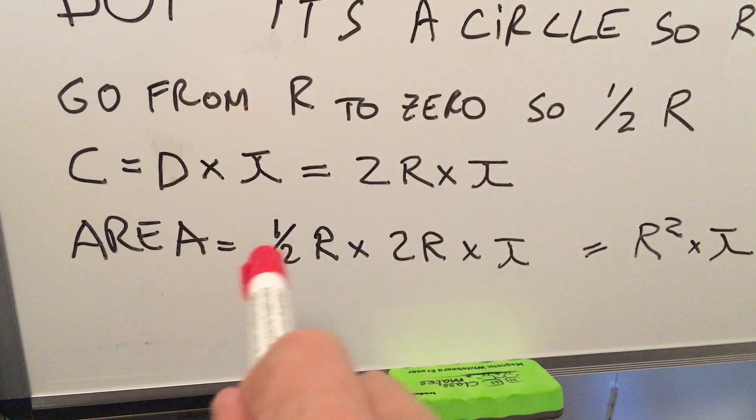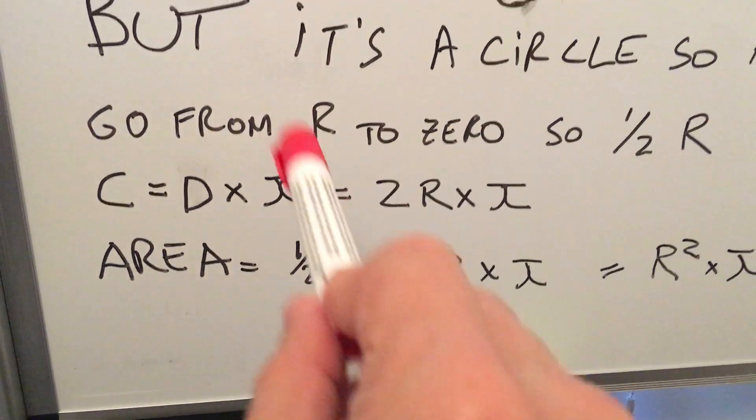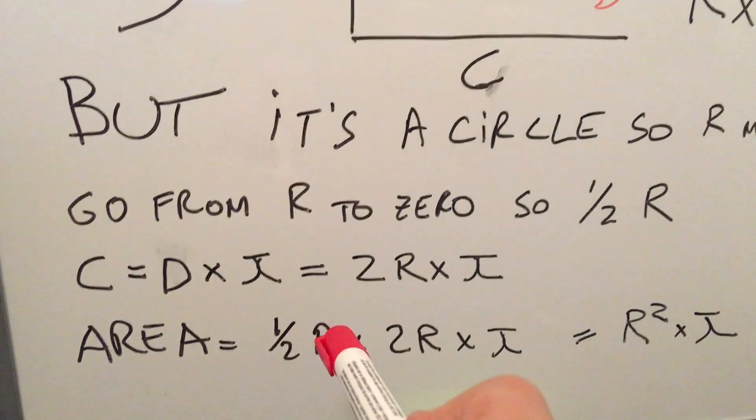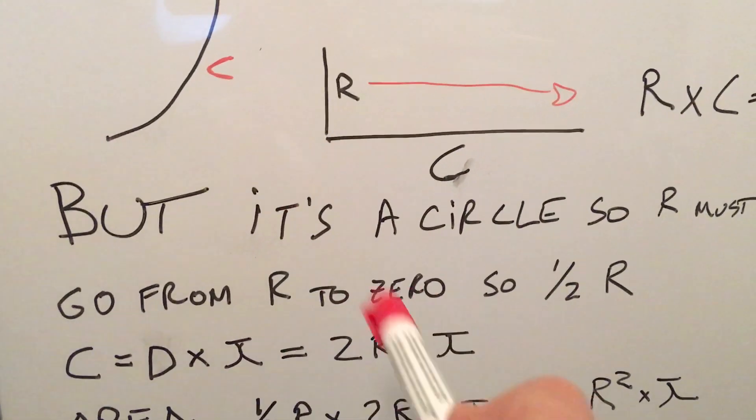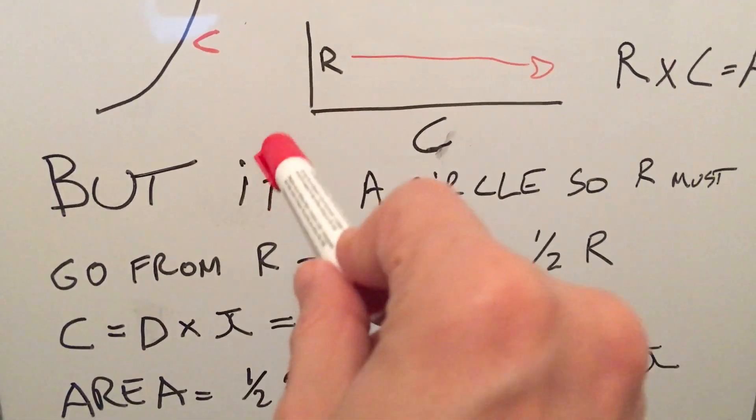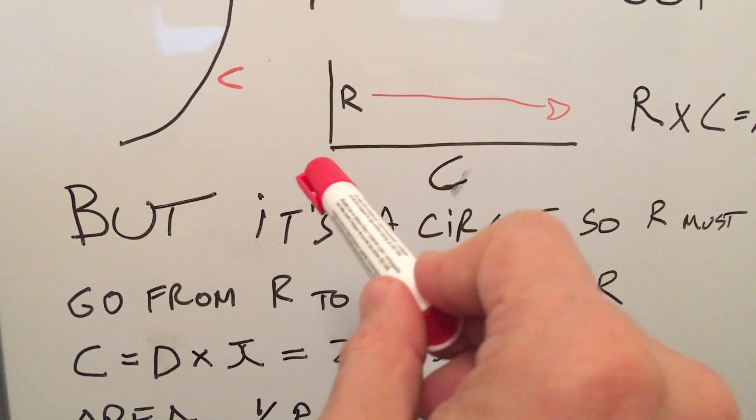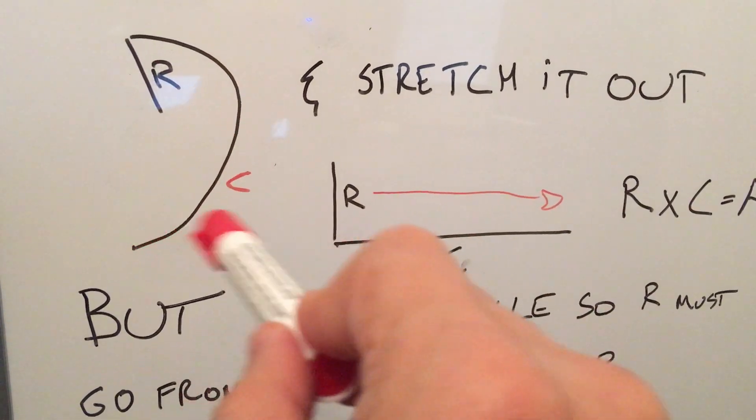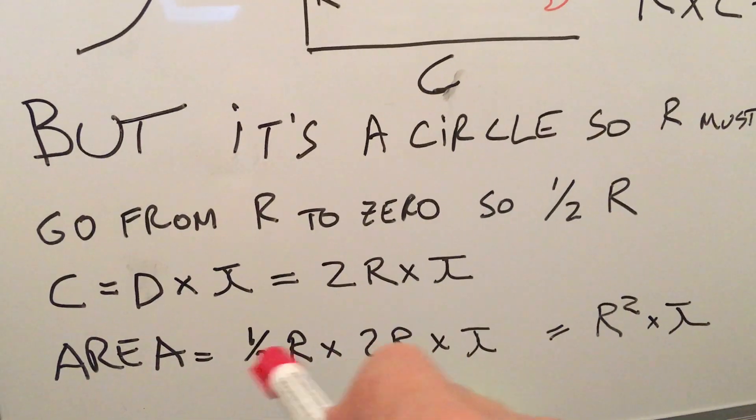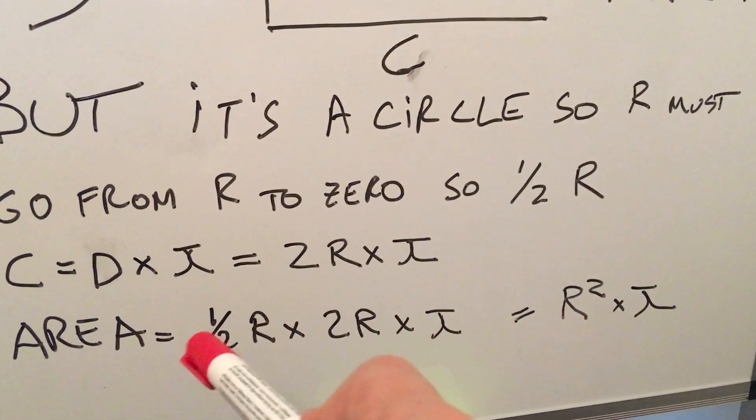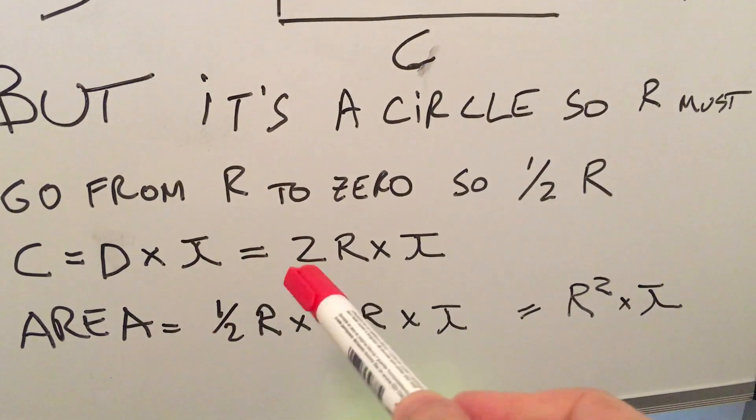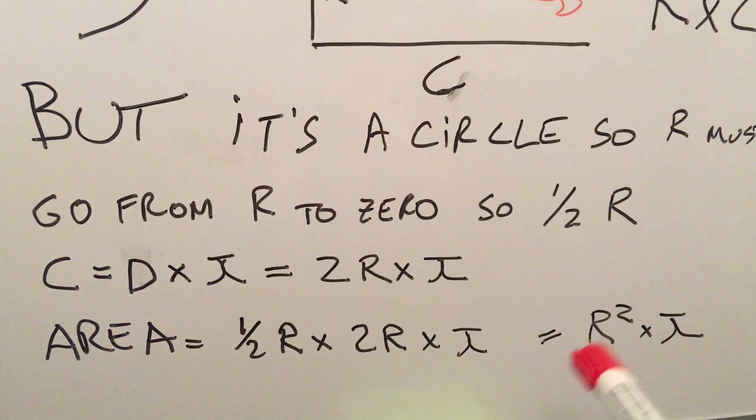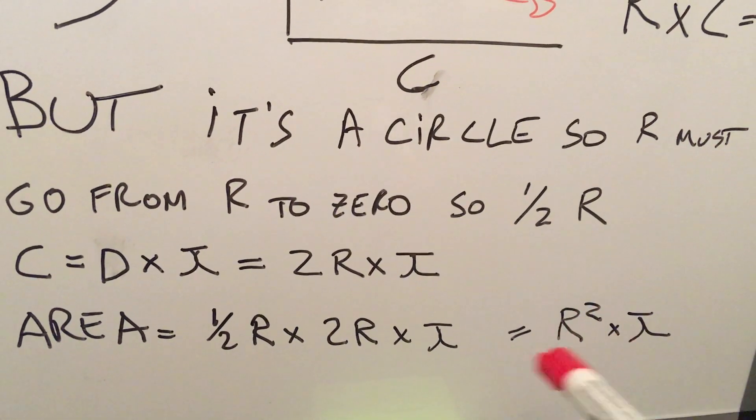So, here we write it again as half of the radius, right, because the radius goes from full radius to zero, because it's spinning, times two r times pi, because that's another way to write the circumference. Remember, the circumference is pi times the diameter. Diameter can be written as two r. So, that's where you get that from. And, if you substitute, half multiplied by two is one, so that cancels out. r times r is the same as r squared, and there you have r squared times pi.